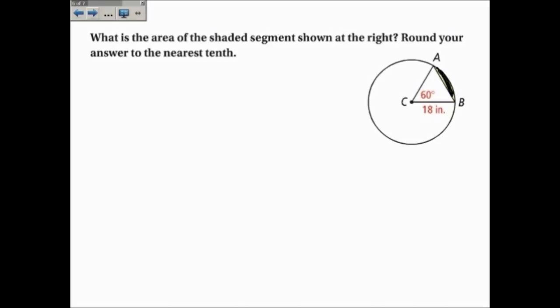So one example to kind of give you a heads up is finding the area of this region. We will first find the area of the sector. We'll subtract the area of the triangle, and that will give us that segment area right there. Now the area of the sector, we know to be the central angle out of 360 times the area of the circle, pi times 18 squared.